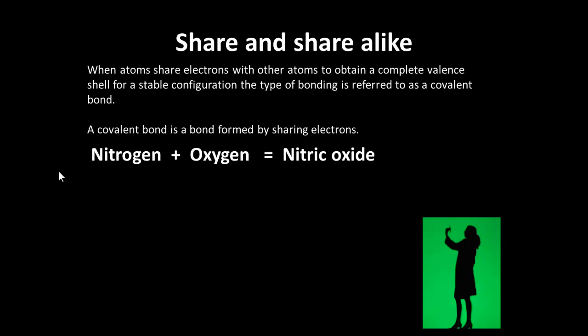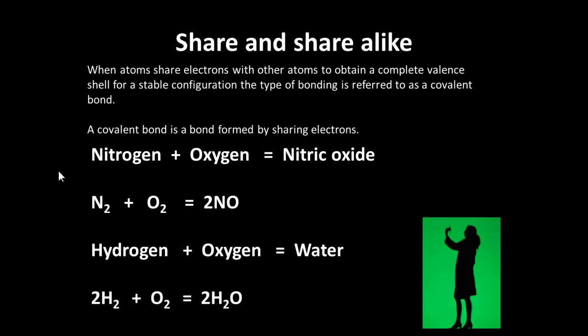Nitrogen plus oxygen, giving nitric oxide, is an example of sharing electrons. We write it as N2 plus O2 gives 2NO. Hydrogen and oxygen forming water is another example of sharing electrons.